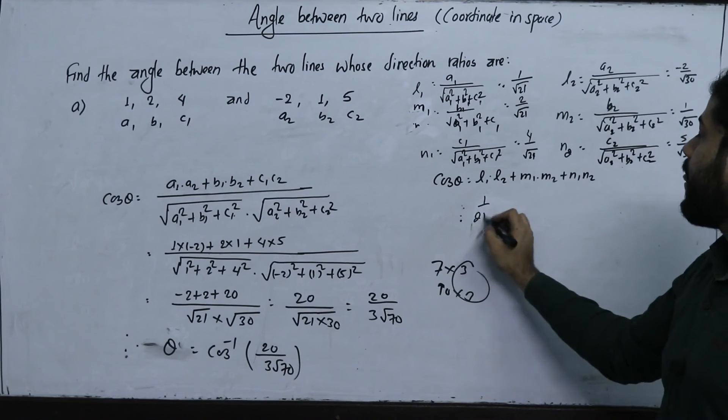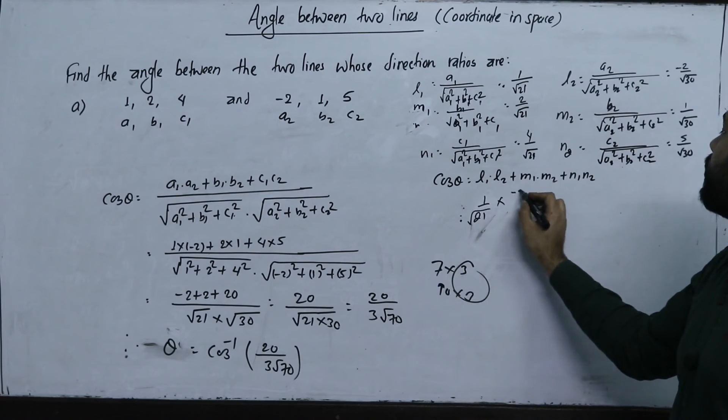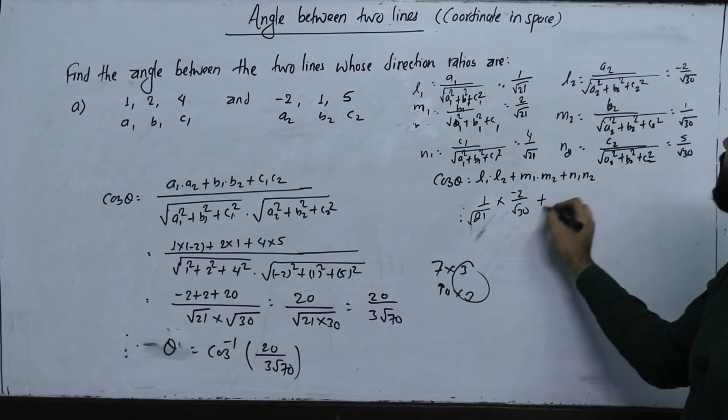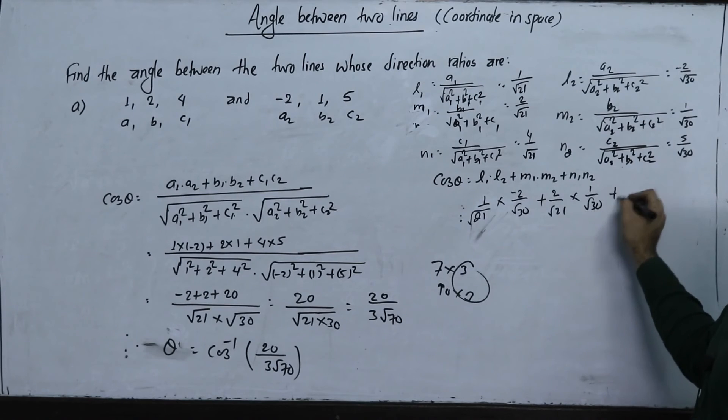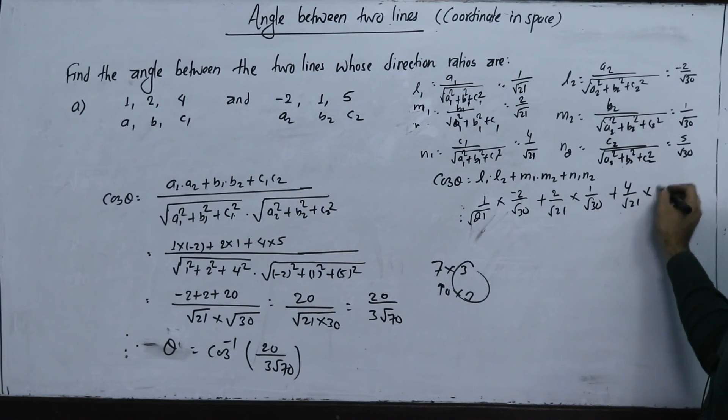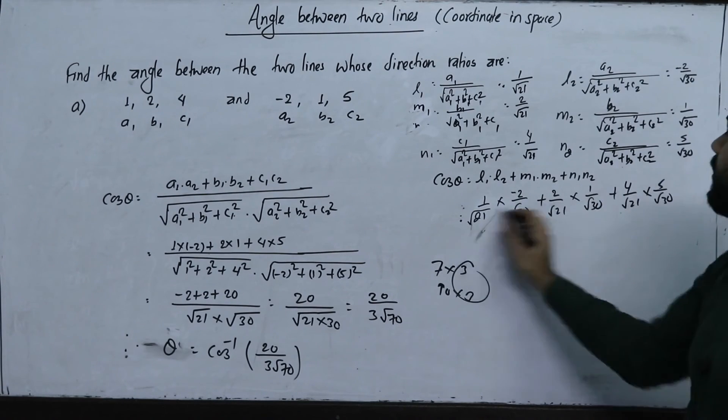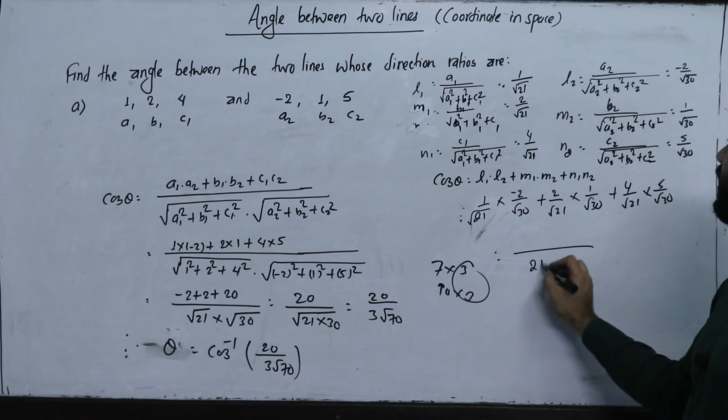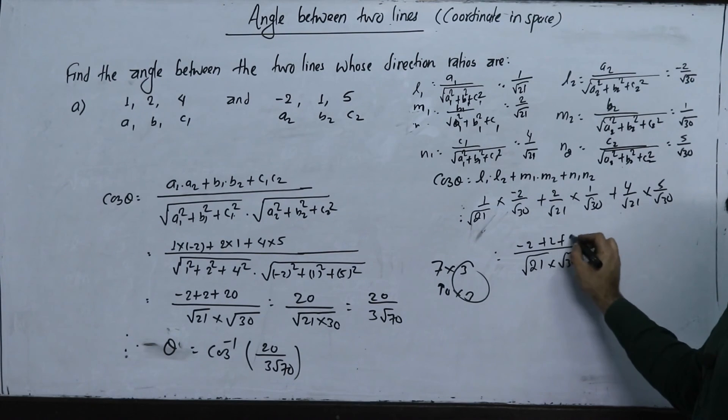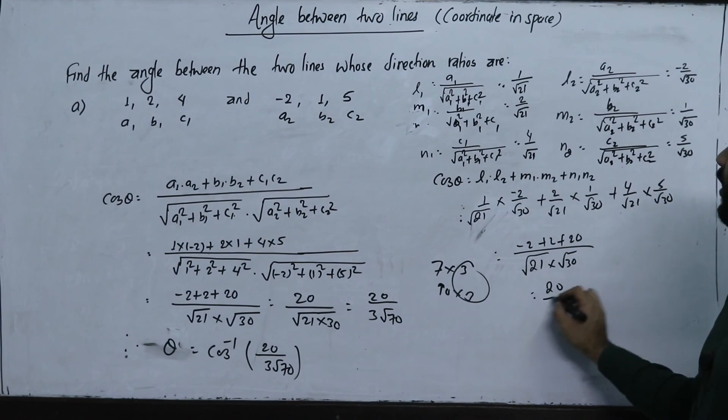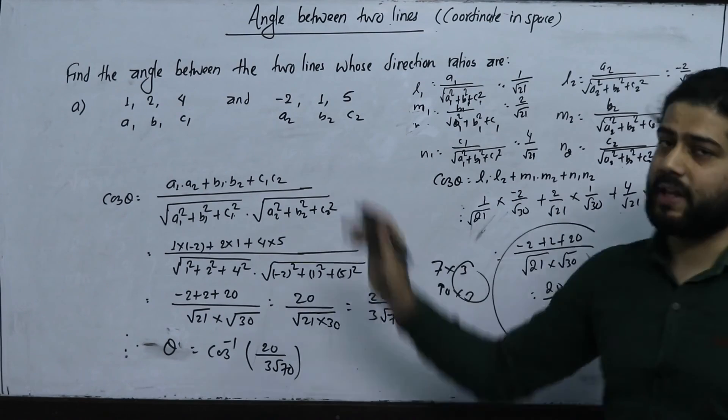Using the formula, cos theta equals 1 over root 21 times minus 2 over root 30 plus 2 over root 21 times 1 over root 30 plus 4 over root 21 times 5 over root 30. This gives us minus 2 plus 2 plus 20 over root 21 times root 30, which equals 20 over 3 root 70. This is the same answer.